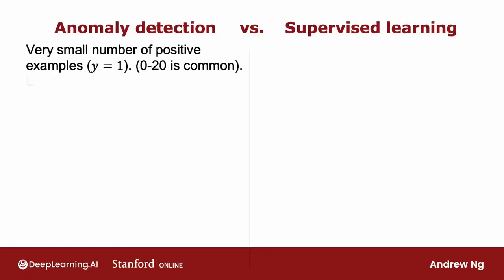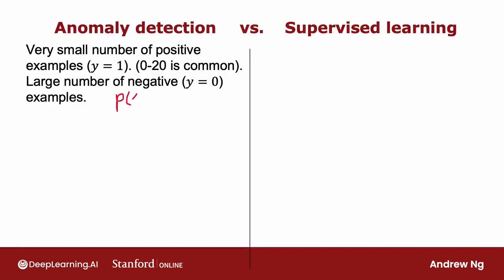Zero to 20 positive examples is not uncommon, and a relatively large number of negative examples with which to try to build a model for p of x. This much smaller set of positive examples is only used in your cross-validation set and test sets for parameter tuning and for evaluation.